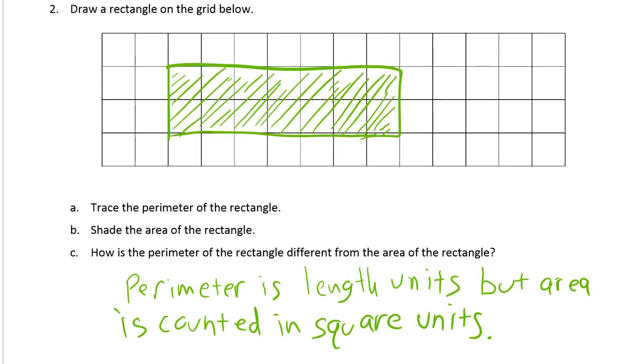Right, because to figure out the area we would count the squares, but to calculate the perimeter we'd count all these little line segments and add them together: one, two, three, four, five, six, seven, eight, nine, ten, eleven, twelve, thirteen, fourteen, fifteen, sixteen, seventeen, eighteen.